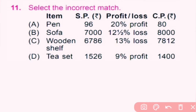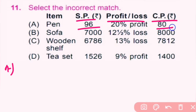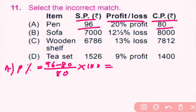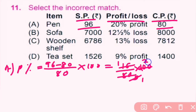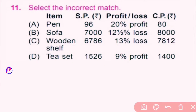Let's start with question number 11: select the incorrect match. Given the sale price, cost price and profit or loss, we first solve option A. Selling price is 96 and cost price is 80, so there is profit. Profit percentage equals sale price minus cost price divided by cost price into 100, so 96 minus 80 is 16, divided by 80 into 100, which gives 20% profit. So it is a correct match.